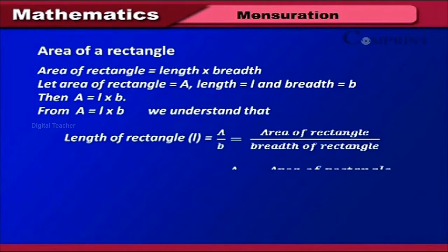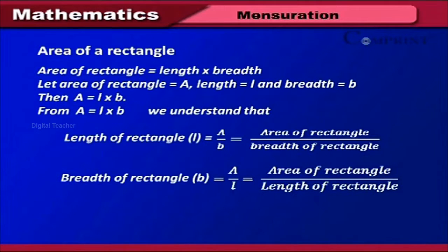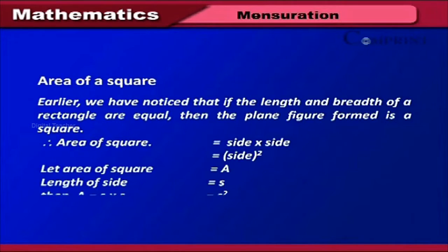Area of a rectangle: Area = length × breadth. If area = A, length = l, and breadth = b, then A = l × b. From this, length l = A ÷ b (area divided by breadth), and breadth b = A ÷ l (area divided by length). Area of a square: since a square has equal length and breadth, area of square = side × side = side². If the side is S, then A = S × S = S².